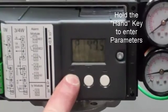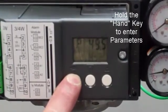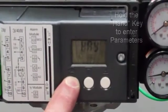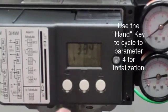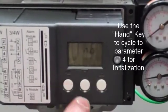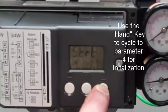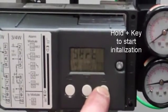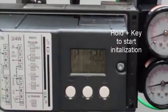Hold the hand key to enter the parameters. Use the hand key to cycle to parameter 4 for initialization. Hold the plus key to start the initialization.